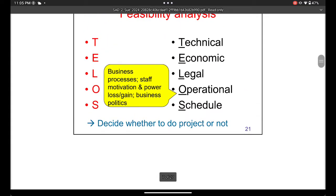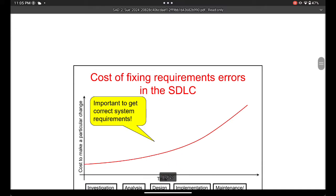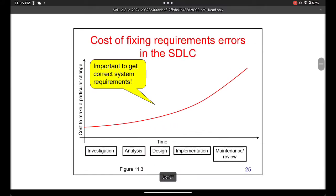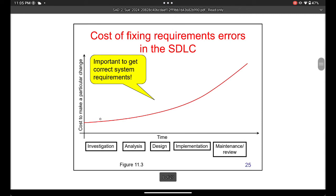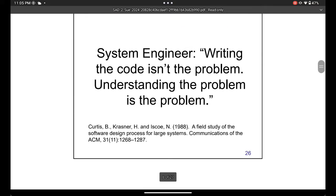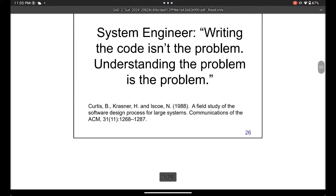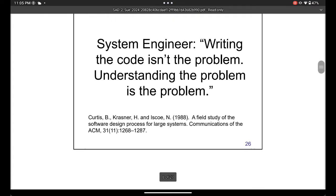All these feasibility factors will decide whether to do the project or not. Regarding cost of fixing requirements: if you make a mistake at the investigation stage the cost is very low, but if you make a mistake at further steps it becomes very expensive.